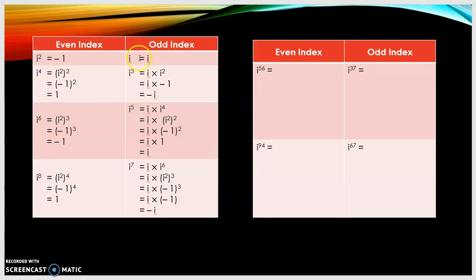For odd index, i is just i. For i to the power of 3, we separate it into two parts: i times i². From i², we change to negative 1, so negative 1 times i is negative i. This works because i times i² is i to the power of 1 times i squared, and for multiplication we sum the indices, giving i to the power of 3, since 1 plus 2 is 3.